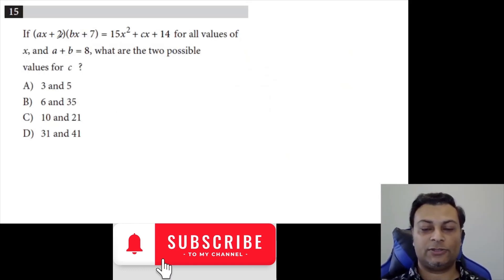Question 15. AX plus 2 times BX plus 7 equals all this for all values of X. And A plus B is 8. What are two possible values for C?